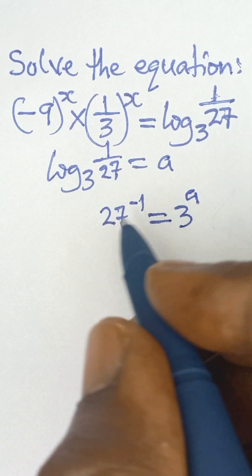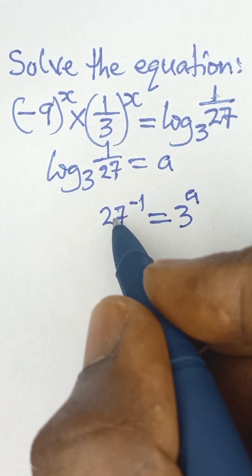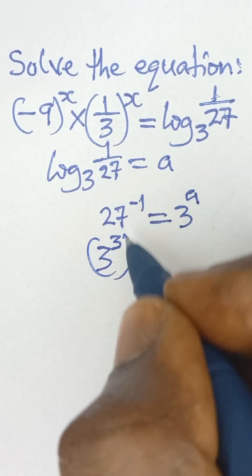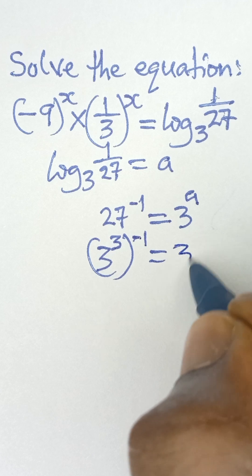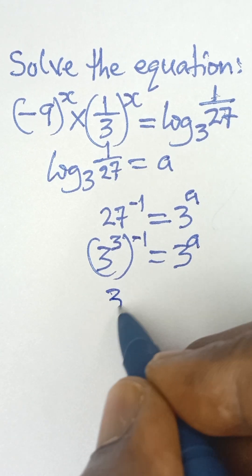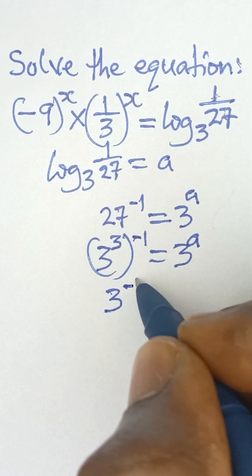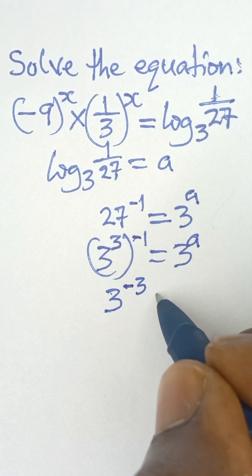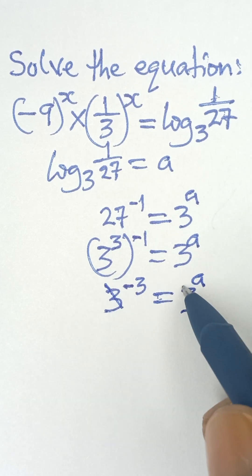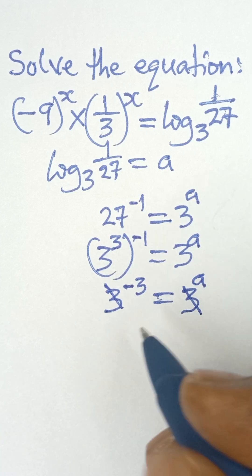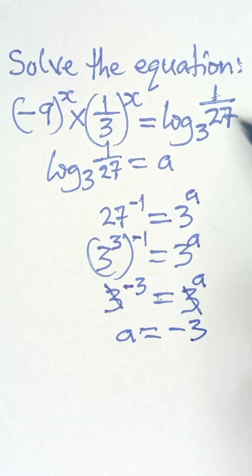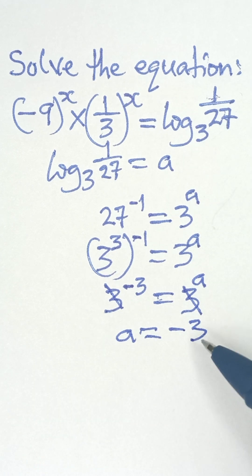We can break 27 down to a base of 3, writing it as 3 raised to the power 3, all raised to the power negative 1, which equals 3 raised to the power a. Multiplying the powers gives 3 raised to the power negative 3, because 3 times negative 1 is negative 3. Since the bases are equal, the powers must be equal, so a equals negative 3. The right-hand side equals negative 3.